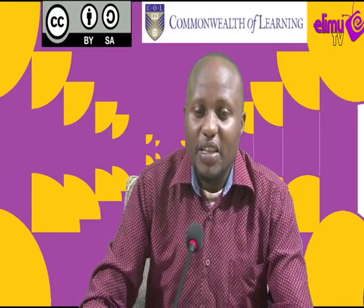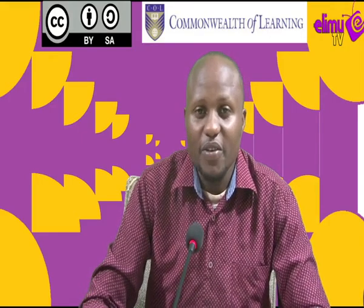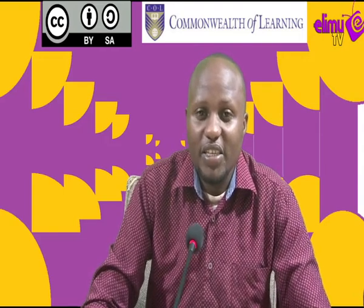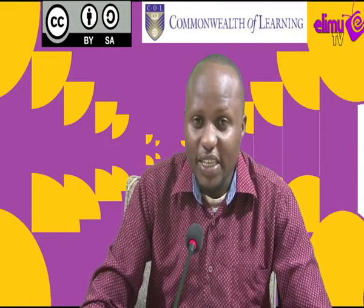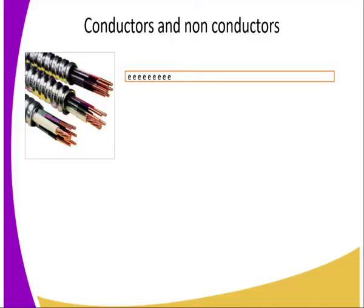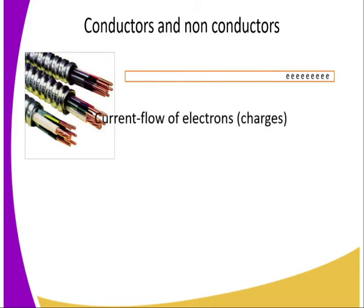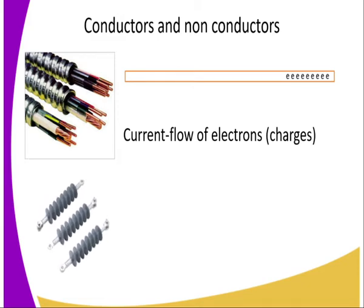So what are conductors? These are substances that allow electric current to flow through them. The reason conductors allow electric current to flow is because they contain delocalized electrons. The delocalized electrons in these substances flow throughout the conductor, and the flow of electrons throughout the conductor is what we basically refer to as current. So current is the flow of electrons, which are charges.